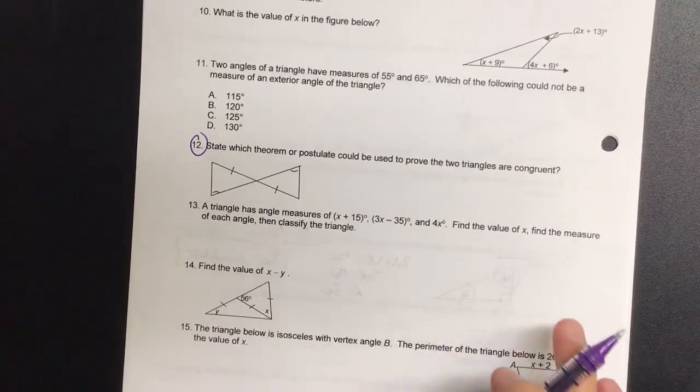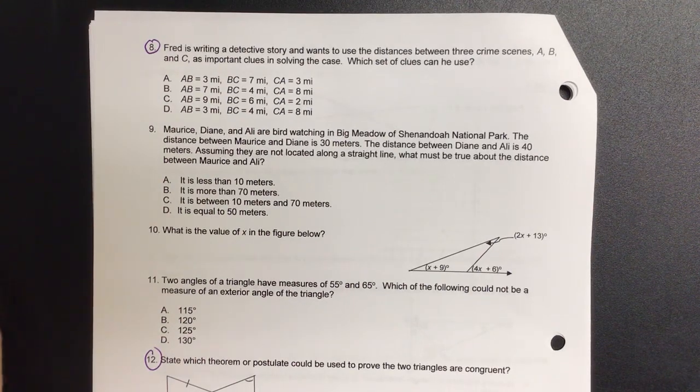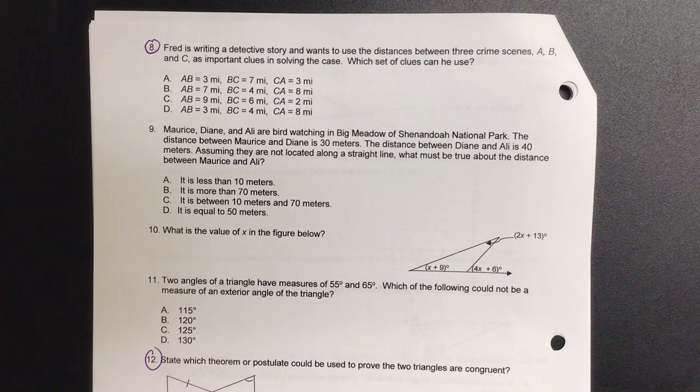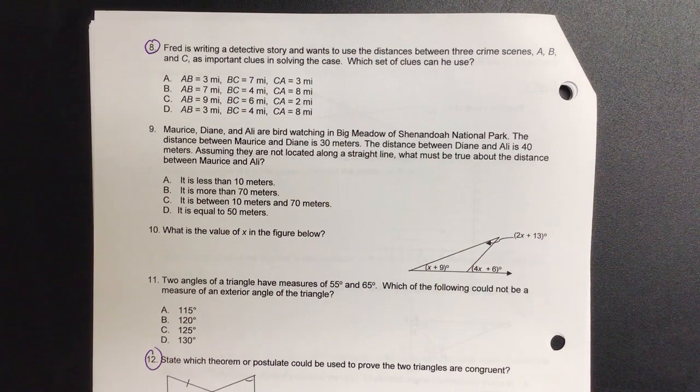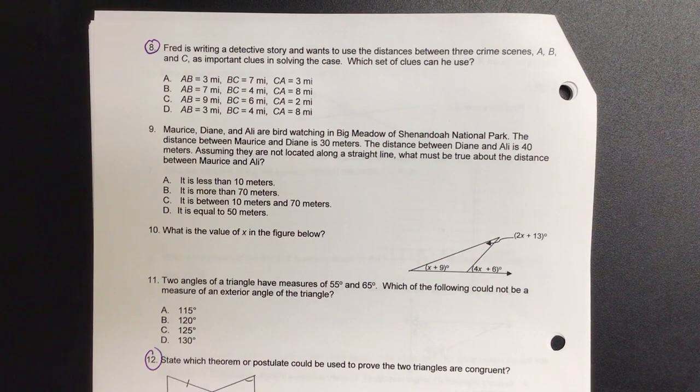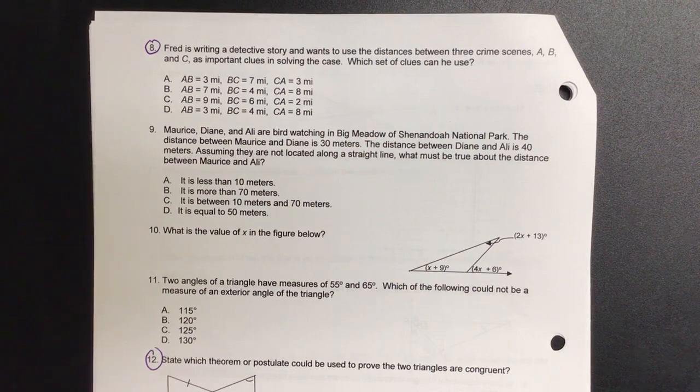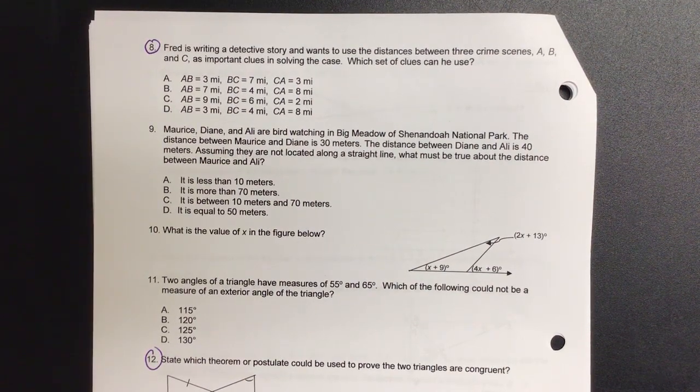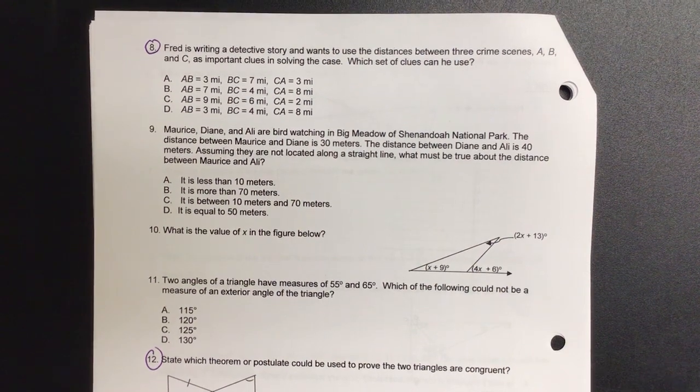And you guys ask for number 8. Okay, Joey, let's read number 8, please. So we have the distance between the crime scene A, B, and C. What could be important? If we're looking at distance between three different crime scenes, what are we actually looking at? What shape? A triangle.